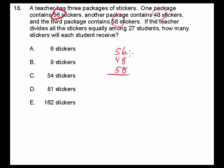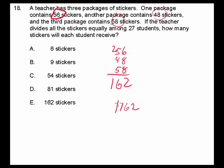So we have 56 plus 48 plus 58. That gives us 16 plus 6 is 2, this is 10, 12, and 16 — so we have 162 stickers in total.